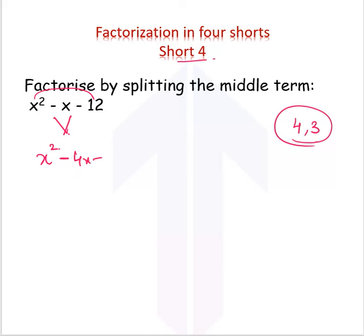because I know minus 4 plus 3 would give me minus 1, which is the coefficient of x that I need, and minus 4 times 3 would give me minus 12. This is how we split the middle term.